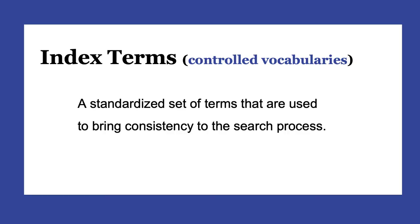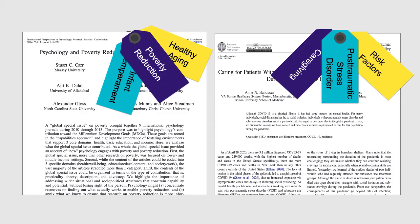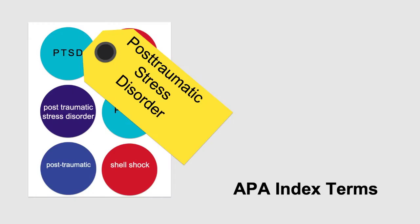This is where index terms come in. Databases such as APA PsycInfo have their own controlled vocabularies or index terms — a standardized set of terms used to bring consistency to the searching process. Index terms are tagged to the corresponding items in the database. So publications that use PTSD, post-traumatic stress disorder with or without a hyphen, and even publications that talk about shell shock, traumatic neuroses, or stress reactions are all tagged with the same APA index term: